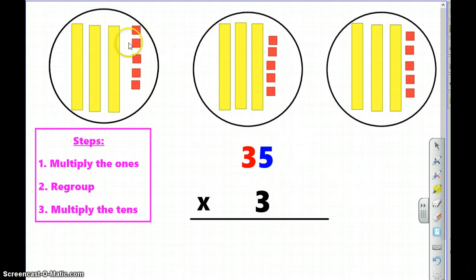So, up above, you're going to see an equal groups representation of 35 times 3. We have three tens, 30, plus five ones. So, 35, and we have three groups of 35. I want you to be thinking about that equal groups representation as we're going through this.